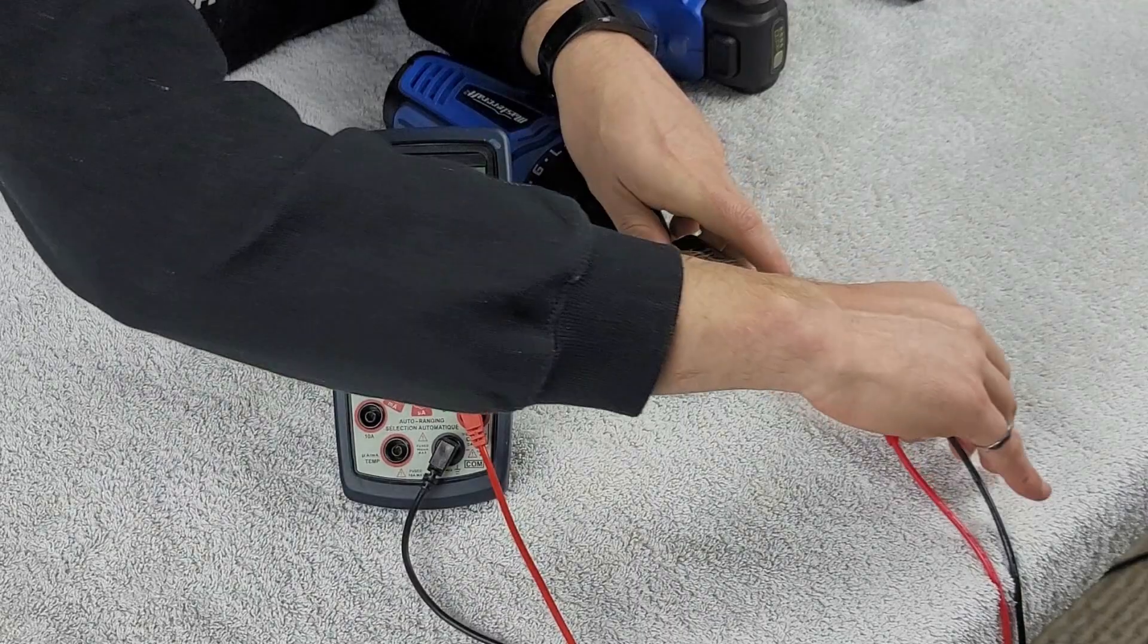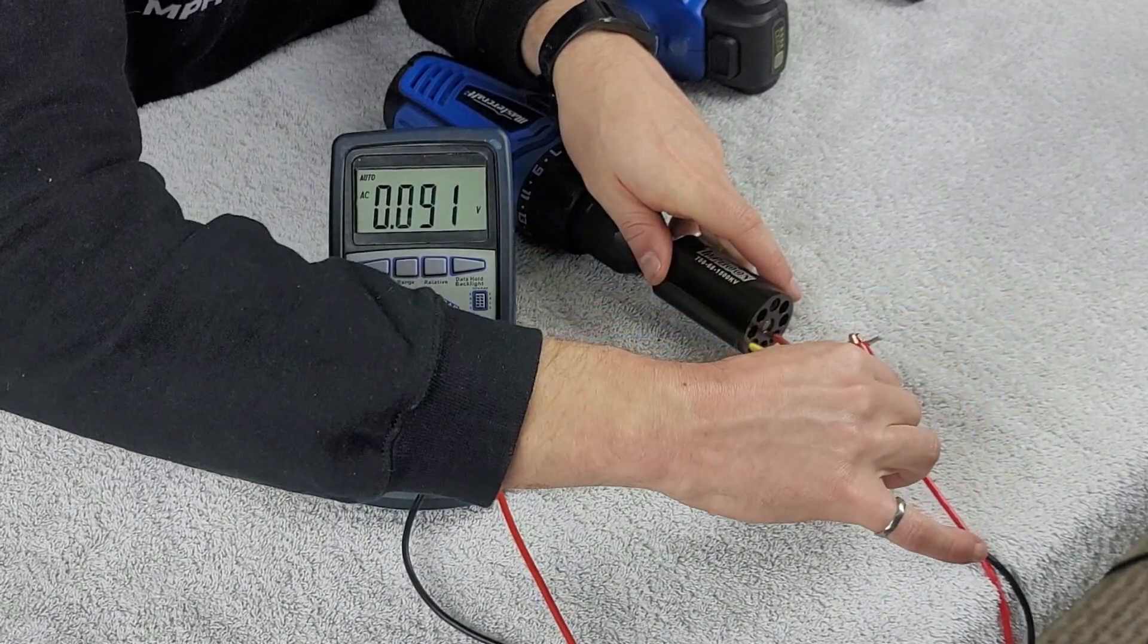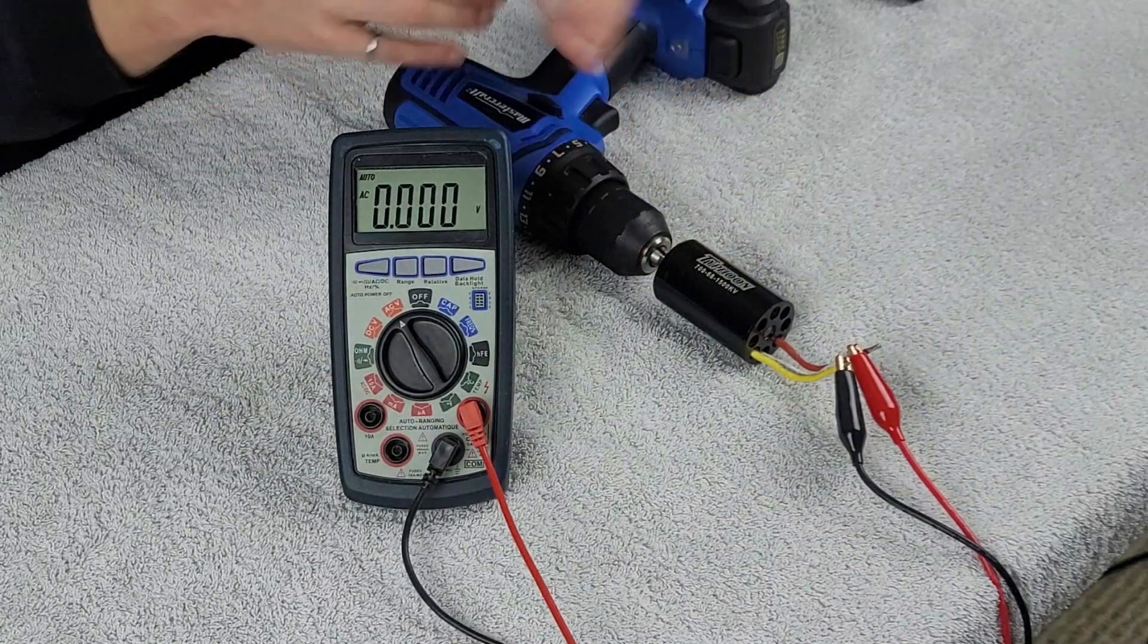So we saw about 6.70 measuring phase two. Now what we're going to do is we're going to switch our black lead over to our yellow lead and measure our third phase here.